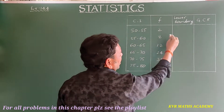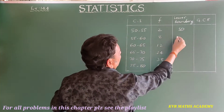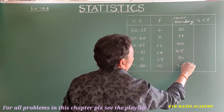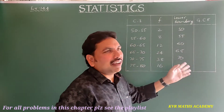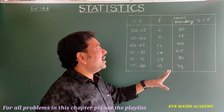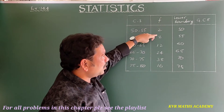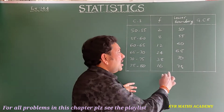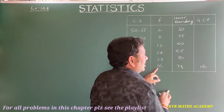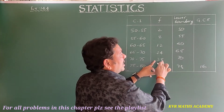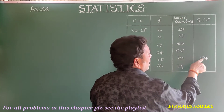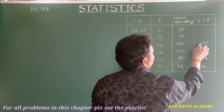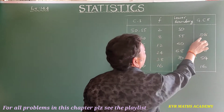Write down the lower boundaries: 50, 55, 60, 65, 70, and 75. For less than cumulative frequency we add from the top downward; for greater than cumulative frequency we add from the bottom upward. So the GCF values are: 16, then 16 + 38 = 54, then 54 + 24 = 78, then 78 + 12 = 90, then 90 + 8 = 98, then 98 + 2 = 100.